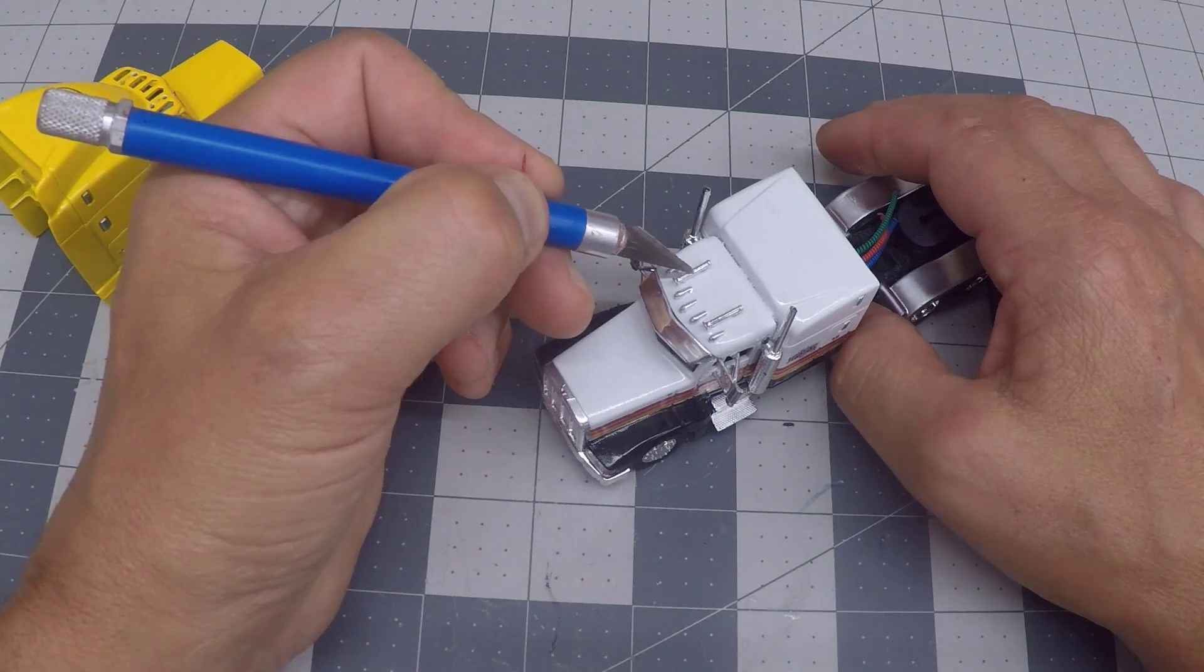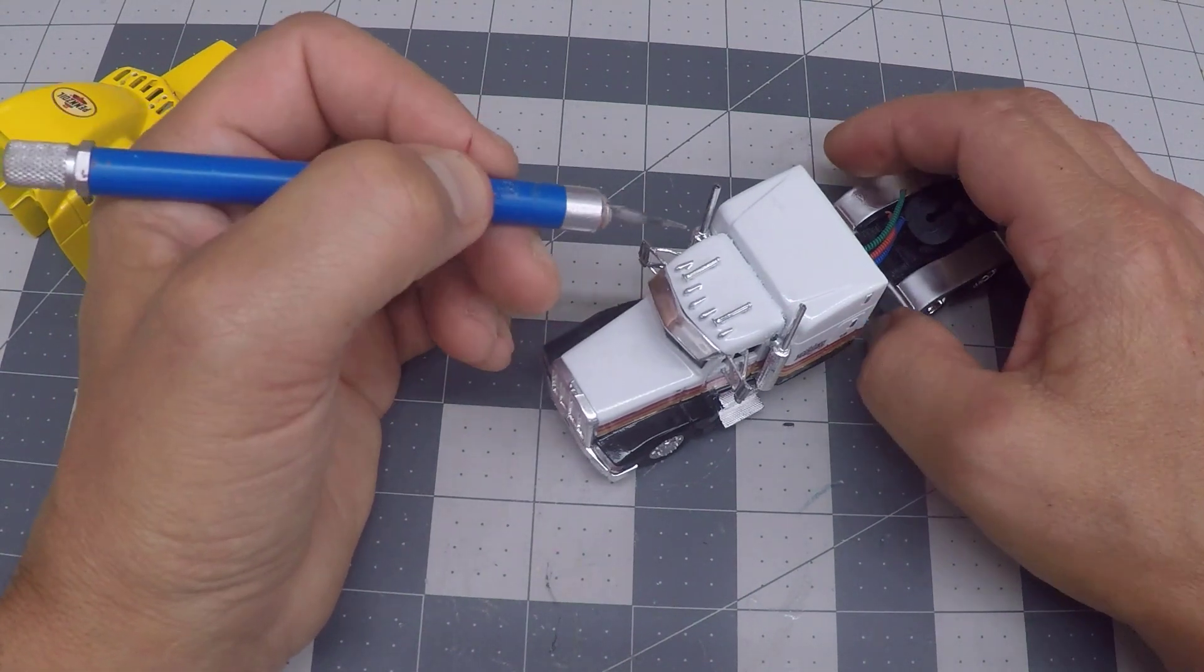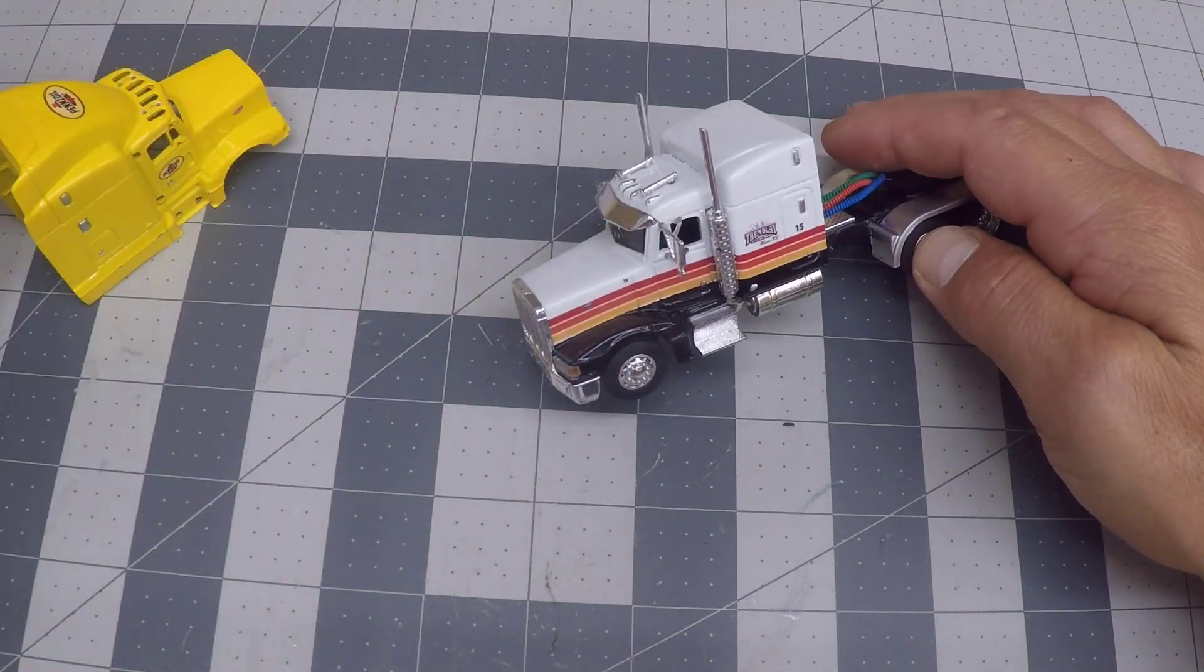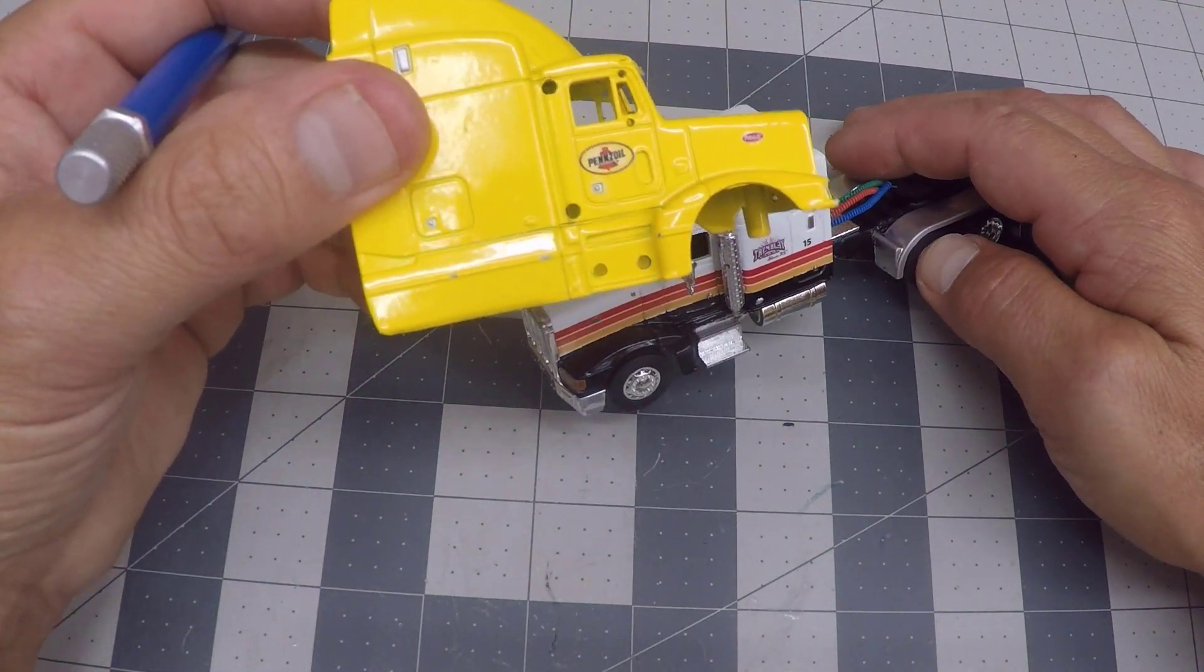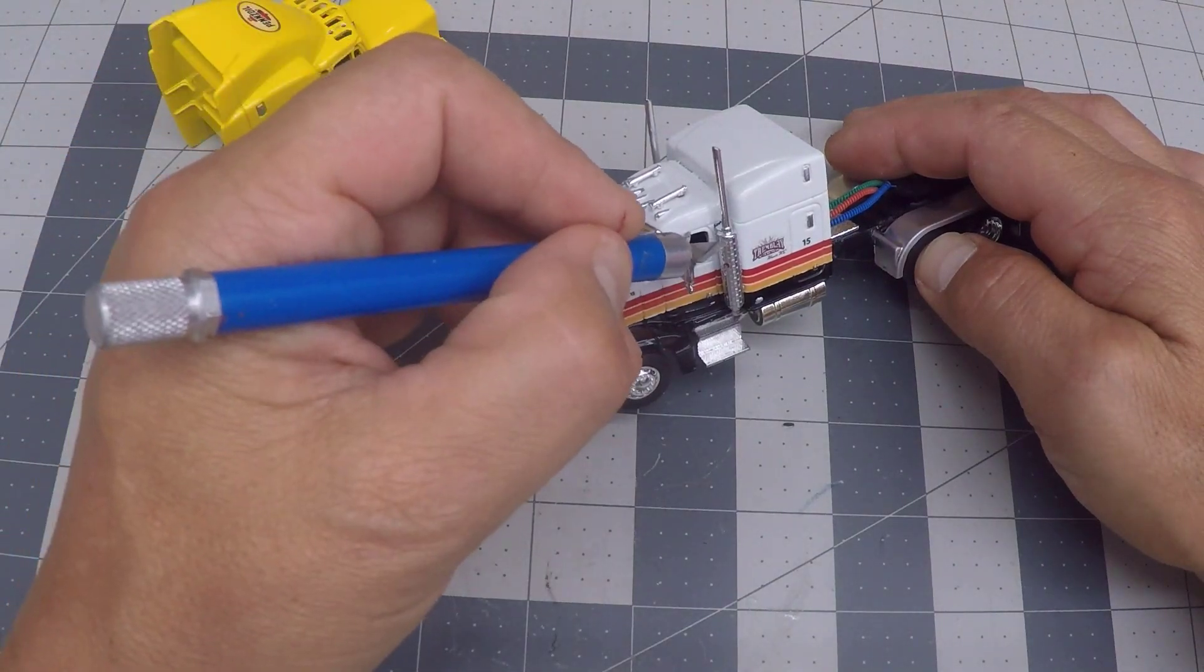Had some leftover air horns from another project, so those went on up here on top. The exhaust is actually the factory exhaust left over from the gearbox casting, so that was reused.